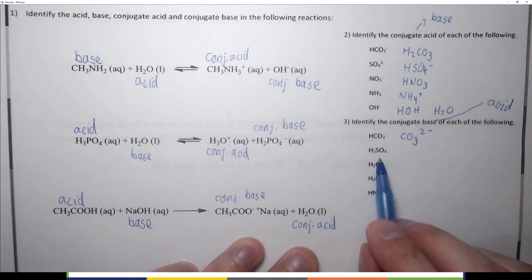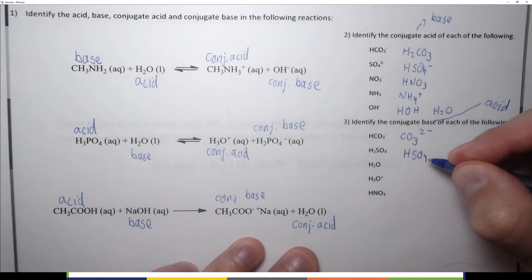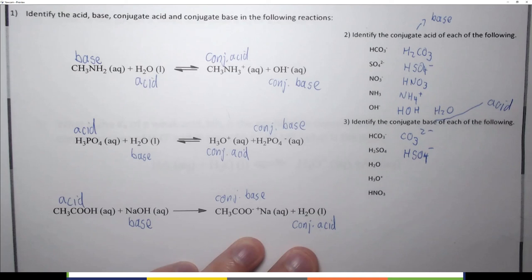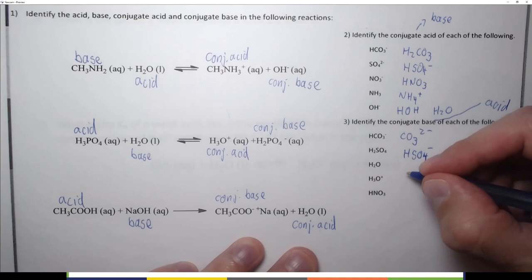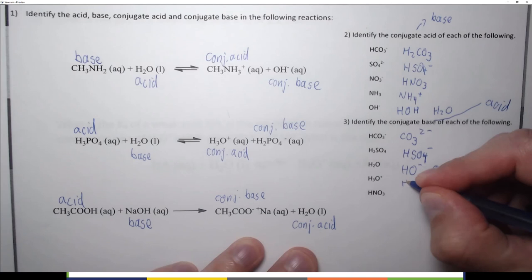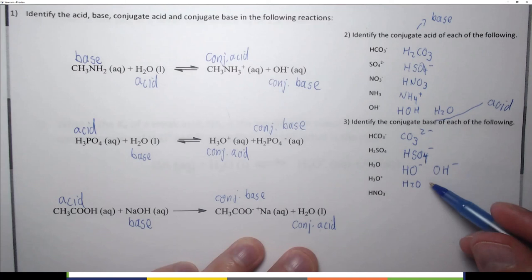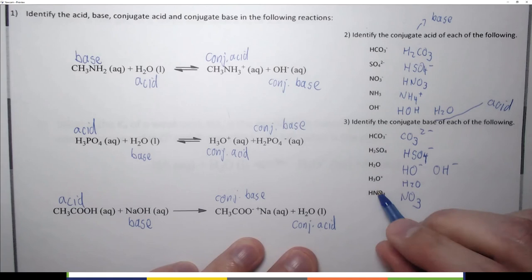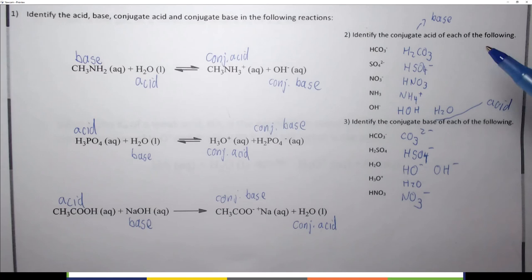For H₂O: remove H⁺ to get OH⁻ (written as HO⁻, more commonly OH⁻). For H₃O⁺: remove H⁺ to get H₂O; it was plus and becomes neutral. For HNO₃: remove H⁺ to get NO₃⁻; it was neutral and gains a minus. This is how we find the conjugate acid or conjugate base of a species without being given the full reaction.